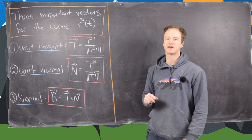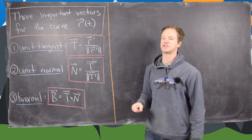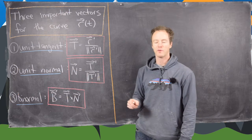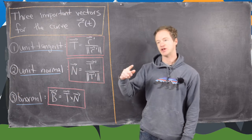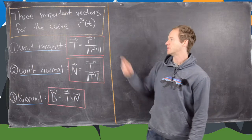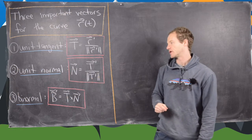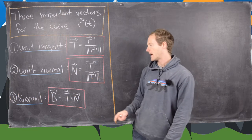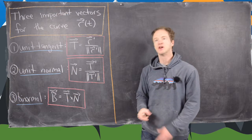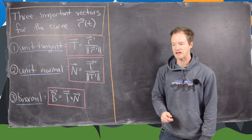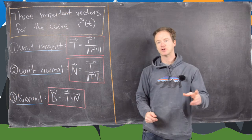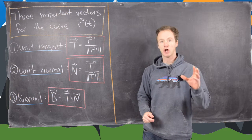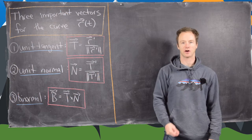So this normal vector is going to be orthogonal to the tangent vector. If the unit tangent vector gives you the instantaneous direction of a curve, then the unit normal vector gives the direction at which the unit tangent vector is changing. Third, we have the binormal vector, which geometrically is the vector normal to the plane that is closest to containing the curve.